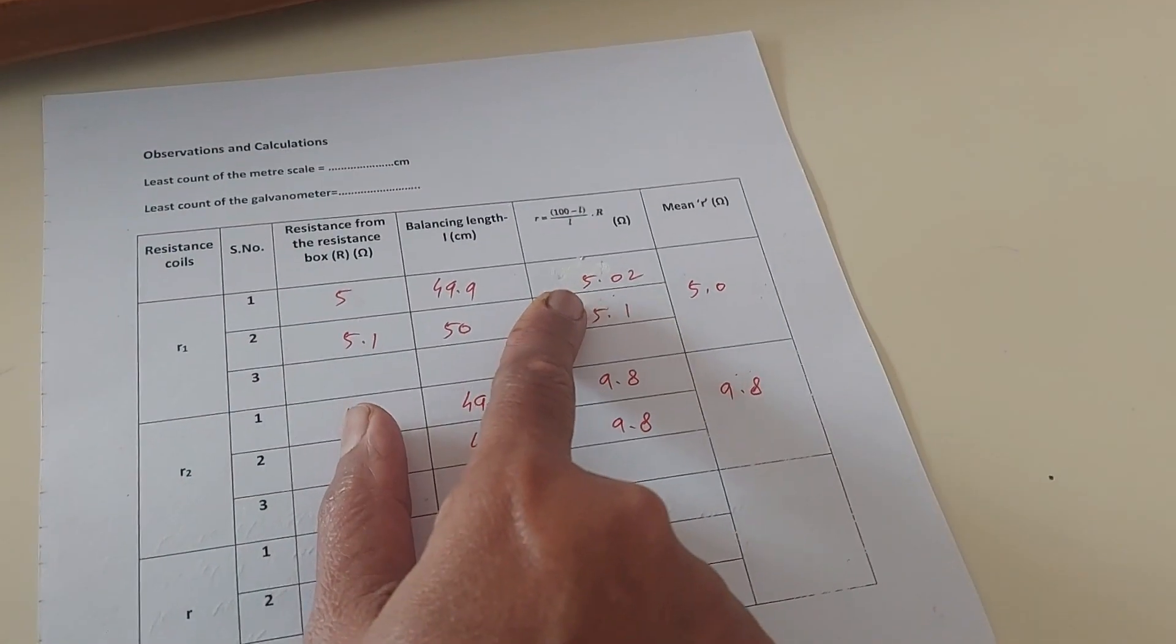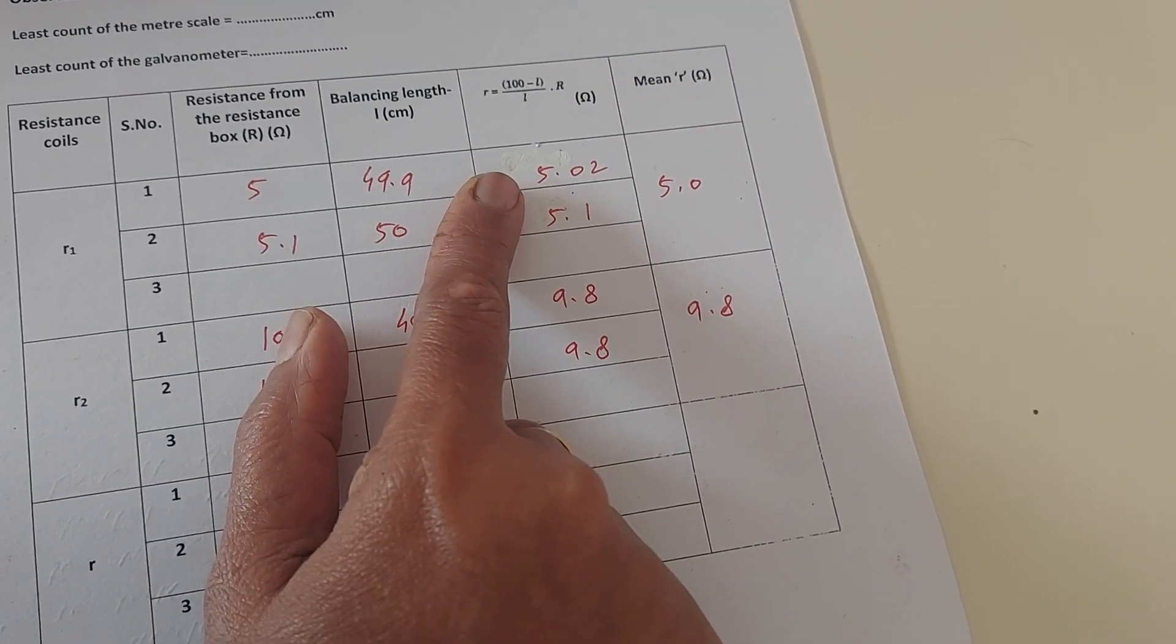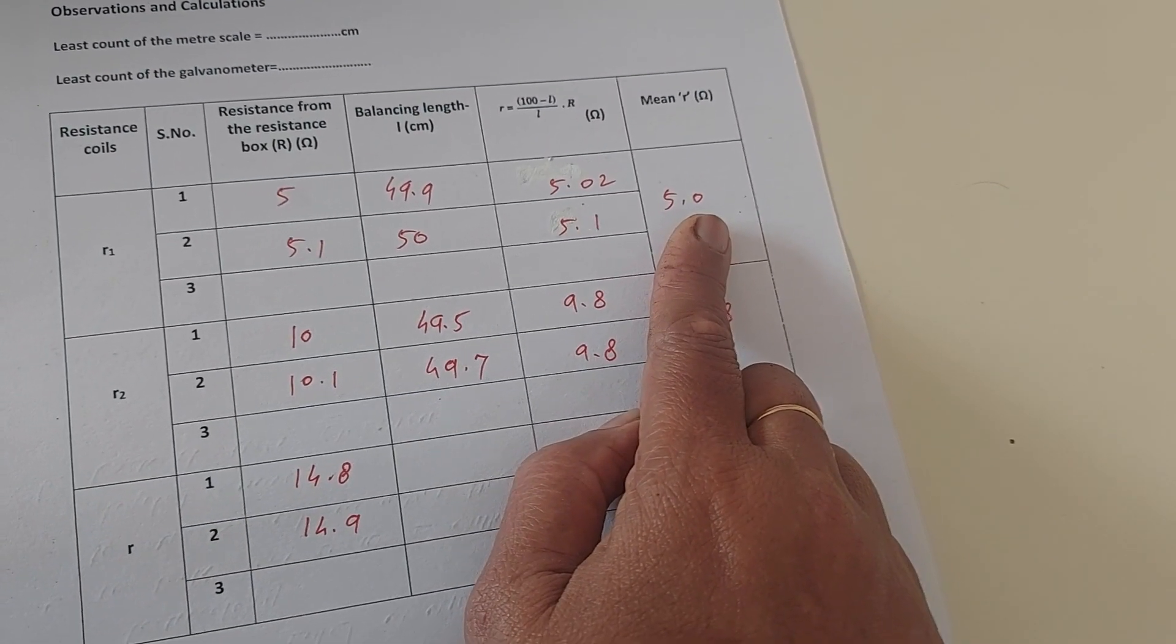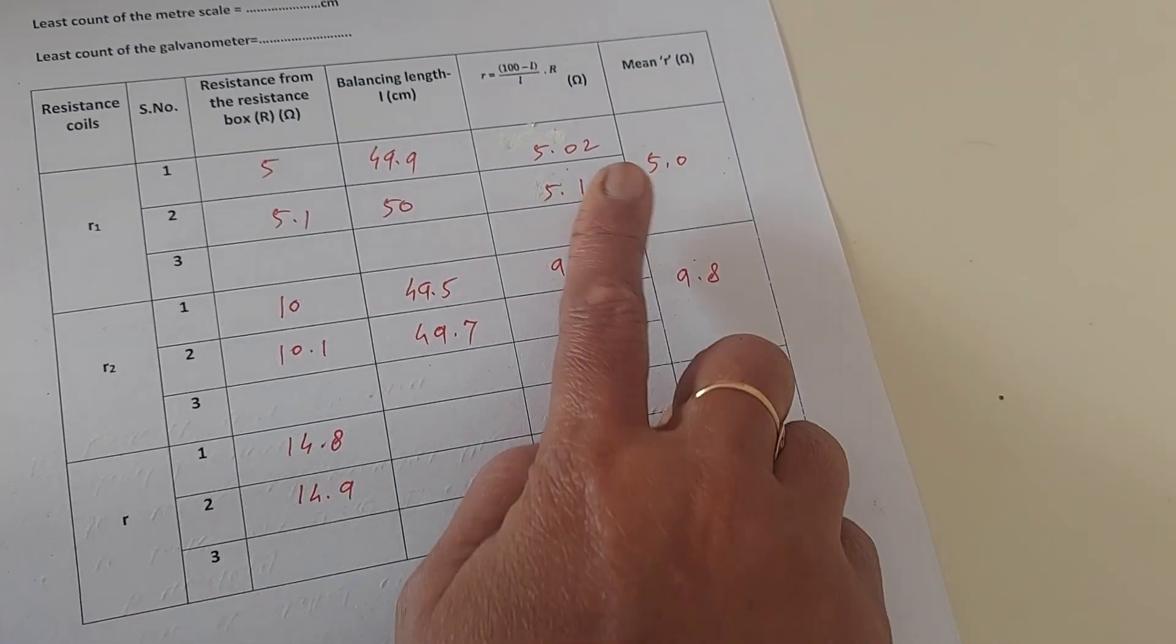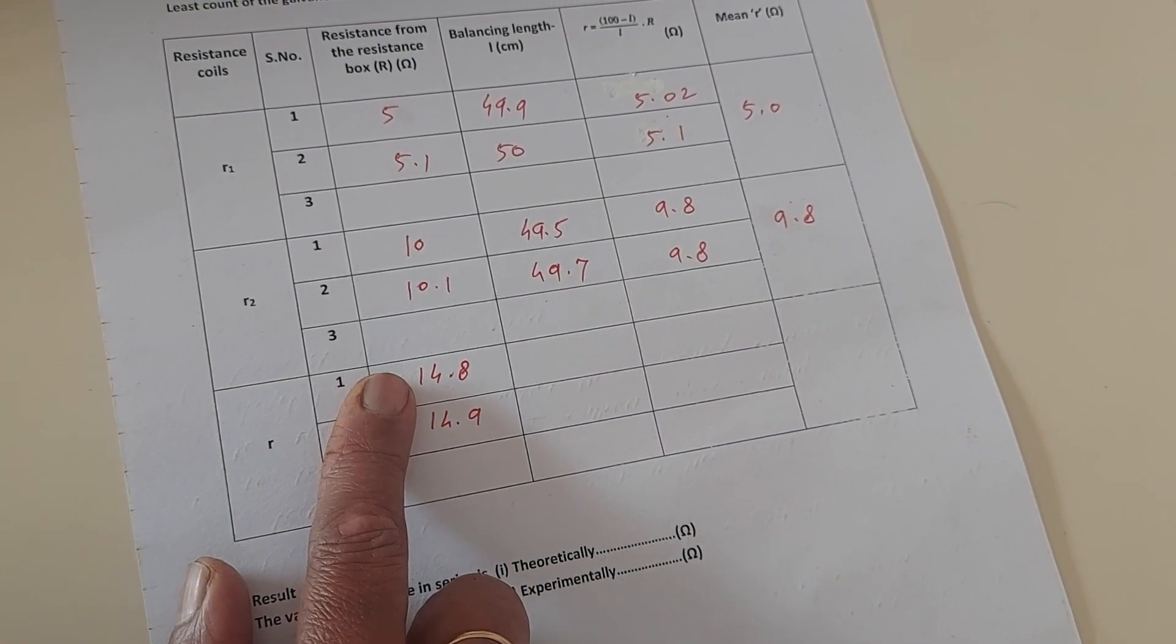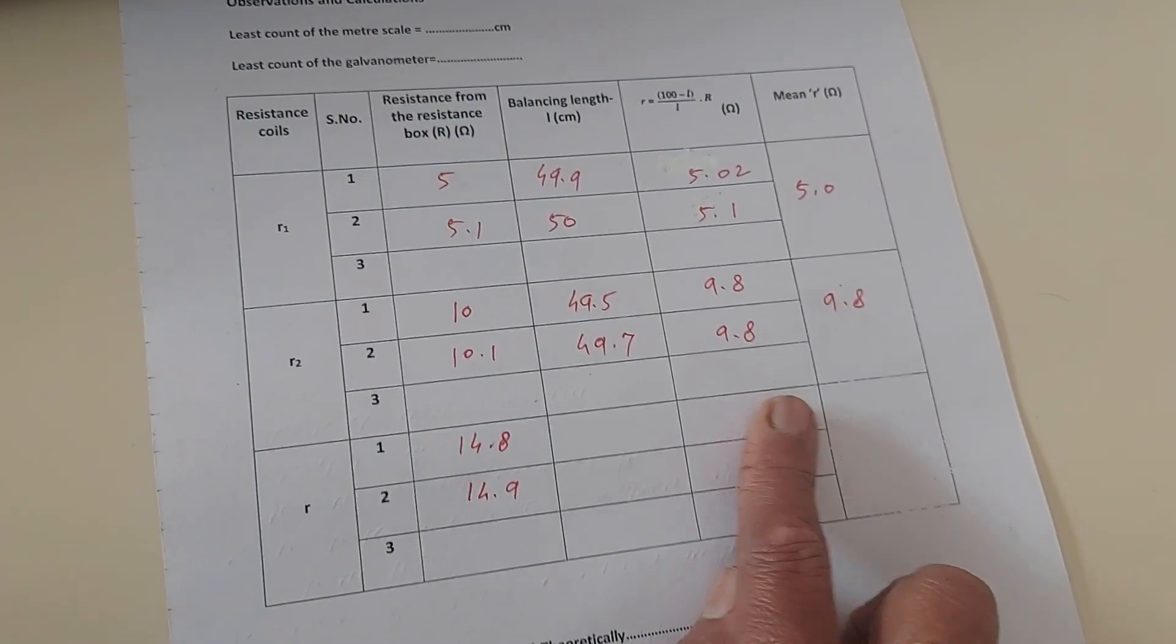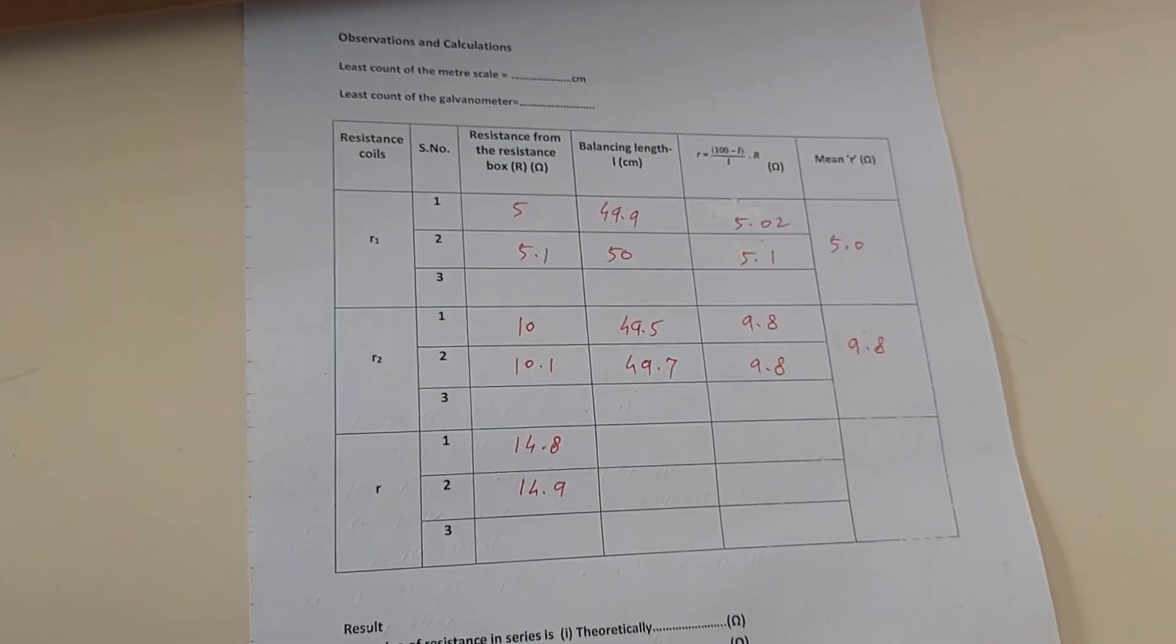We need first to find out the values. By calculation, same as in the previous experiment, the value comes out to be 5.02. Here it comes out to be 5.1. The average is 5.06. Since we have to go till the first place of decimal, we can take it as 5.0 only. Here it is 9.8, 9.8, average 9.8. Sum of the two is 14.8. So from the resistance box we need to take out approximately 14.8.